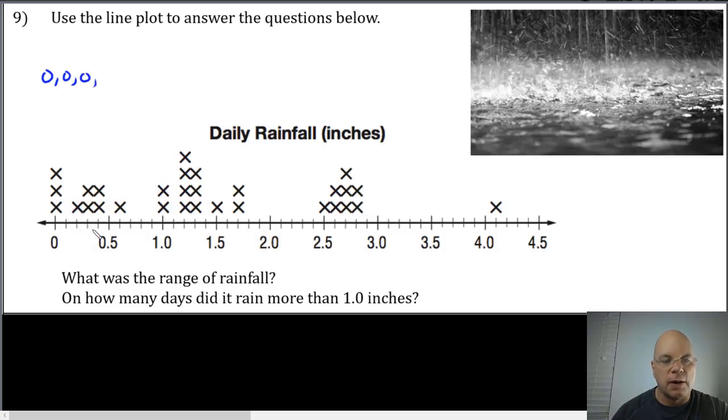The title says daily rainfall in inches. These three x's above the zero means there were three days with zero rainfall. There's one x above 0.2, meaning one day with two-tenths of an inch. Two days at three-tenths.